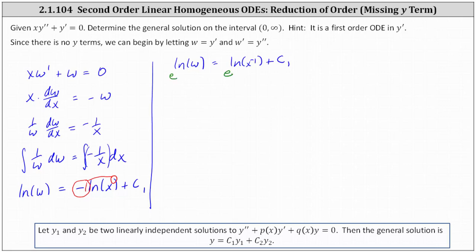Simplifying, we now have w equals e to the power of natural log of x to the power of negative one times e to the power of c sub one, which is just some constant. Simplifying again, we have w equals x to the power of negative one times, let's call e to the power of c sub one, c sub two, giving us w equals c sub two times x to the power of negative one.